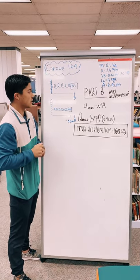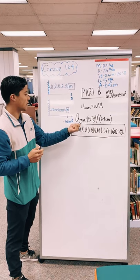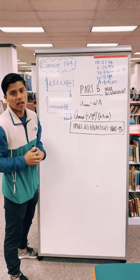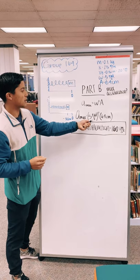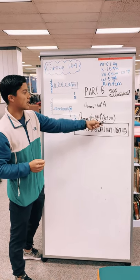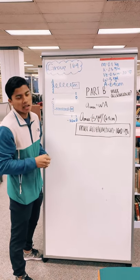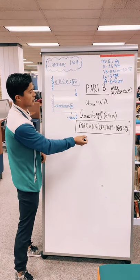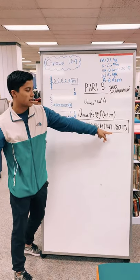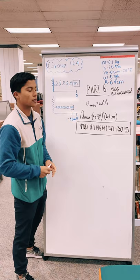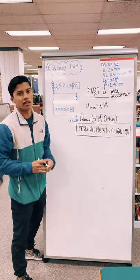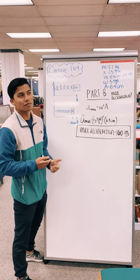So to solve that we just plug everything in: 5 radians per second squared times 6.4 centimeters, and we end up getting the max acceleration which is 160 centimeters per second squared or 1.6 meters per second squared.